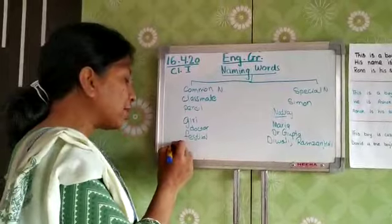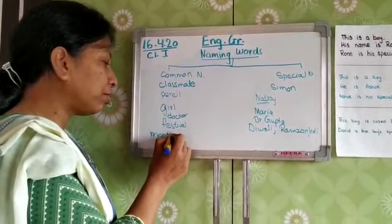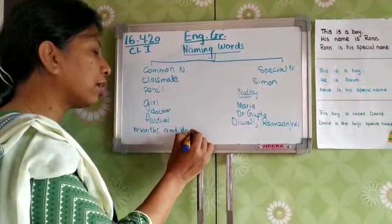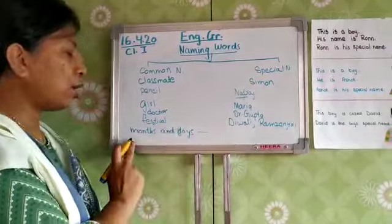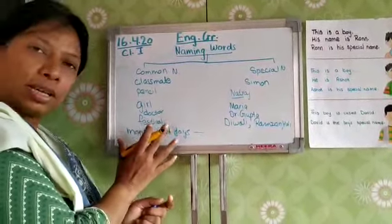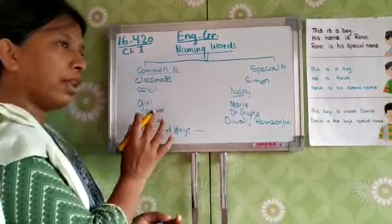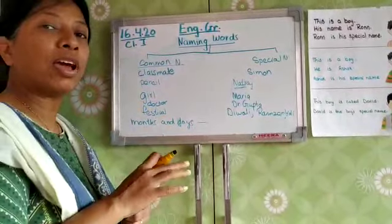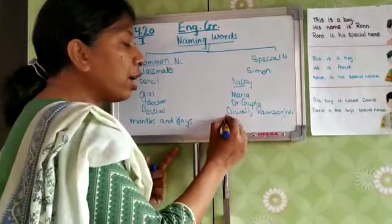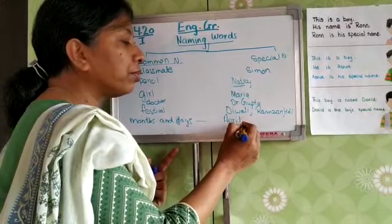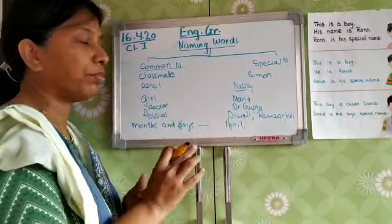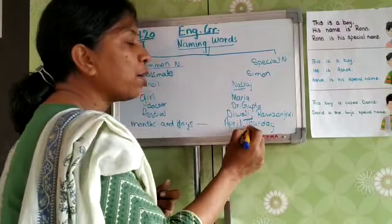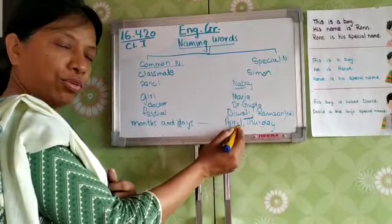Now suppose months and days — these are under common names. We don't know the name of the month or the day. So which month are we in? In the month of April. And what is the day today? Thursday. So this is the name given to a day and the name given to the month.